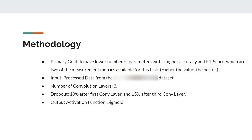Our primary goal was to have a lower number of parameters with higher accuracy and F1 score, which are two of the measurement metrics for this task — higher values are better. There are three convolutional layers in our approach. For dropout, there is one dropout layer of 10% after the first convolutional layer and 15% after the third convolutional layer. The output activation function used is the sigmoid activation function.